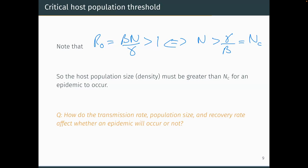If β or N increase, it's more likely you get an epidemic. If the recovery rate γ goes down — meaning people are infectious for longer — an epidemic is also more likely. This should be fairly intuitive.